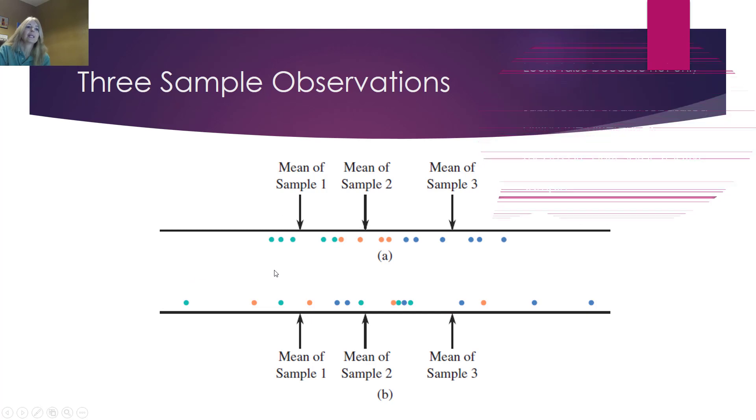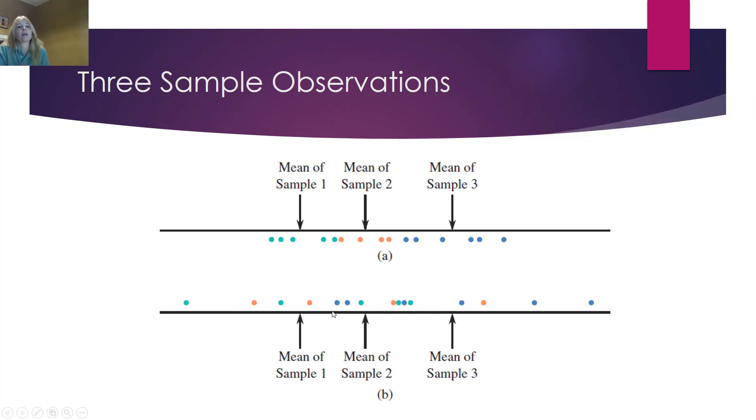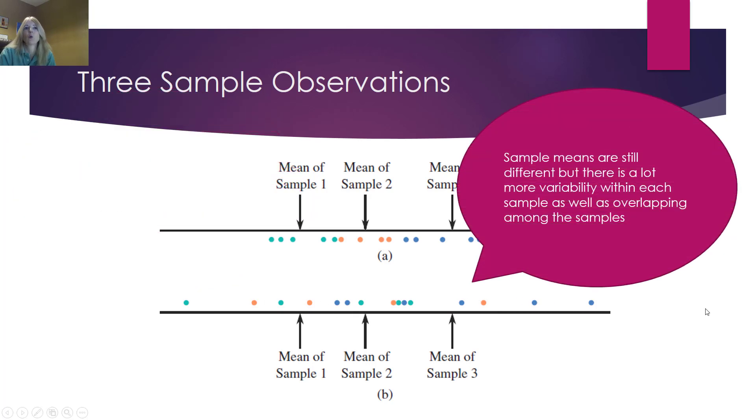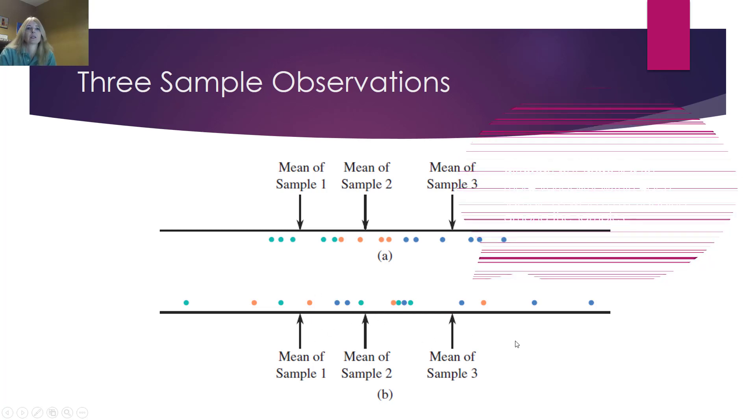The second example, the means may look like there still is a difference. But notice here, the data is more spread out. There's a lot more variability. And so not really sure what's going on here, even though the sample means are still different. But with all this variability, we might want to look and see what are the differences between these three means.